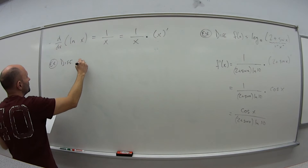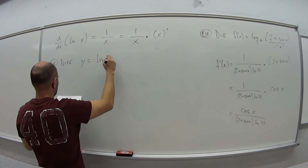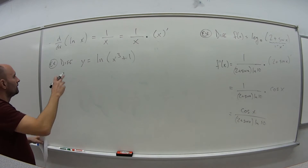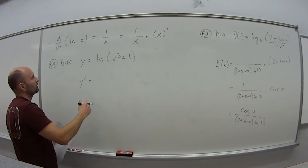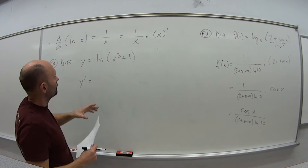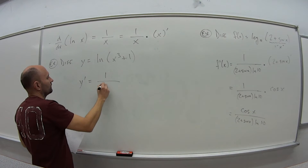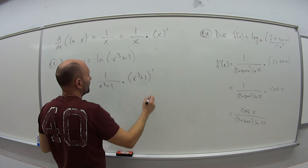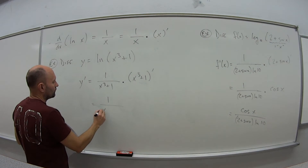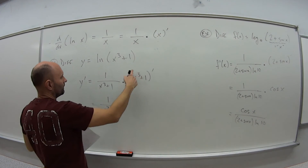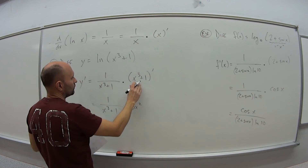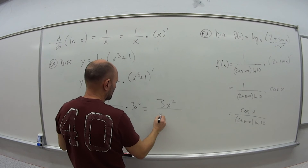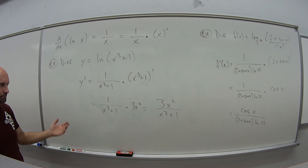Let's look at an example where it's not simple. Differentiate y equals the natural log of x cubed plus 1. So y prime: it's the natural log of something, so it's 1 over that something — 1 over x cubed plus 1 — times, by the chain rule, the derivative of x cubed plus 1. The derivative of x cubed is 3x squared, and the derivative of 1 is 0. Combining these, y prime equals 3x squared over x cubed plus 1.